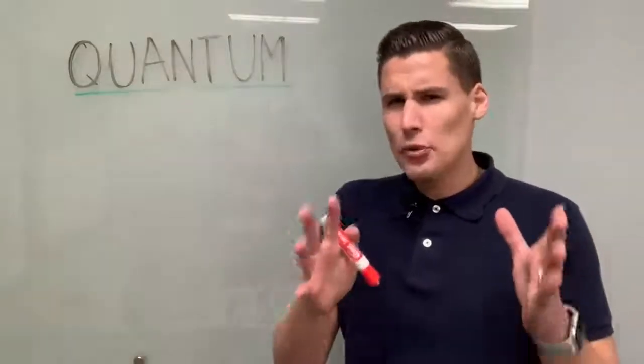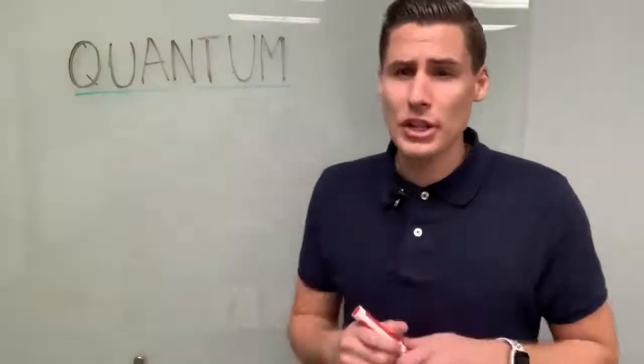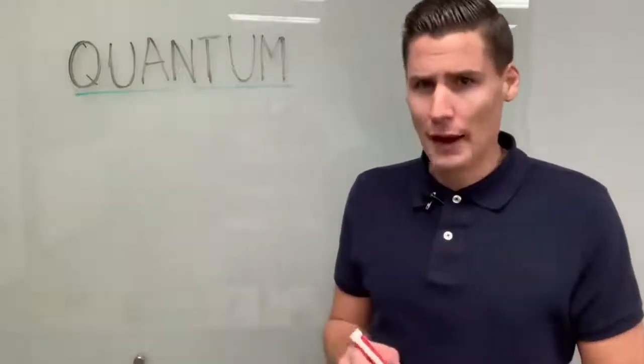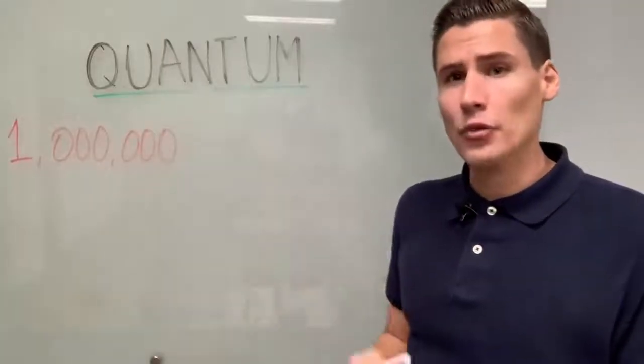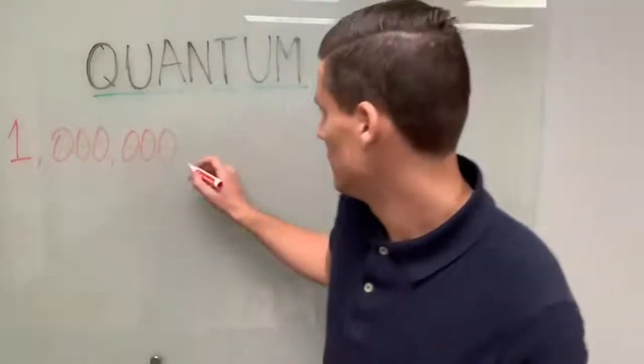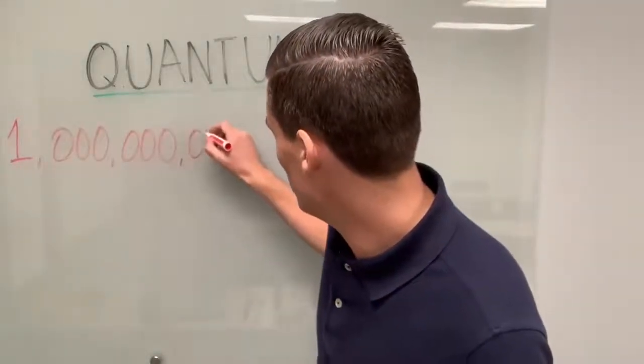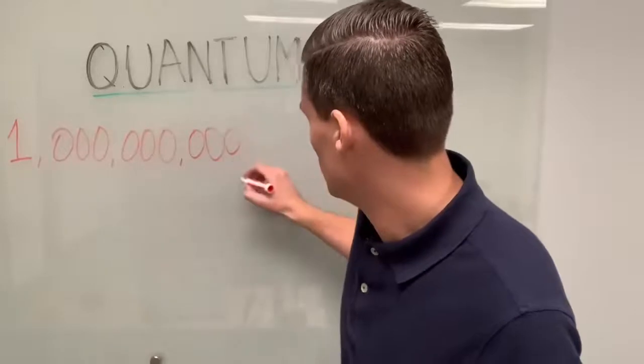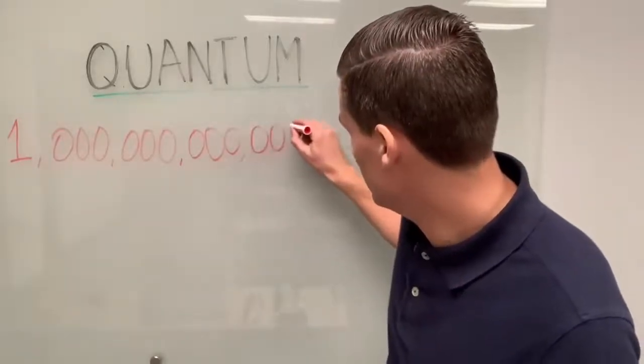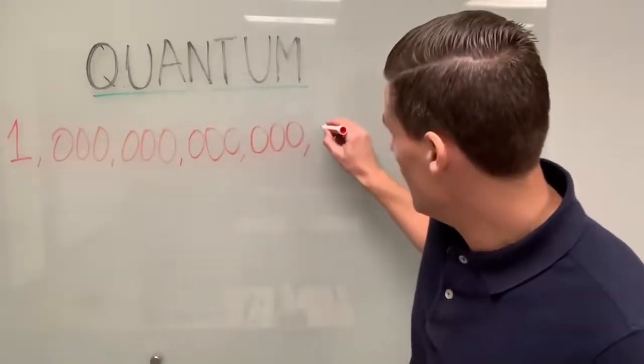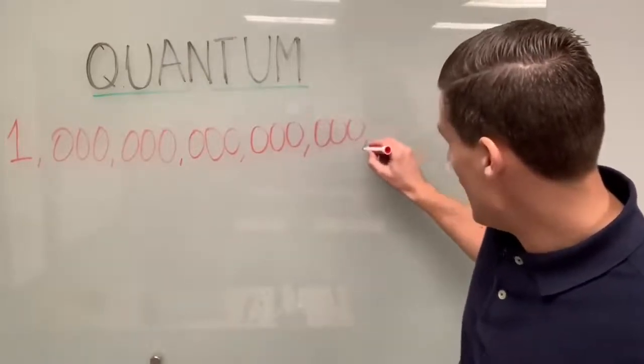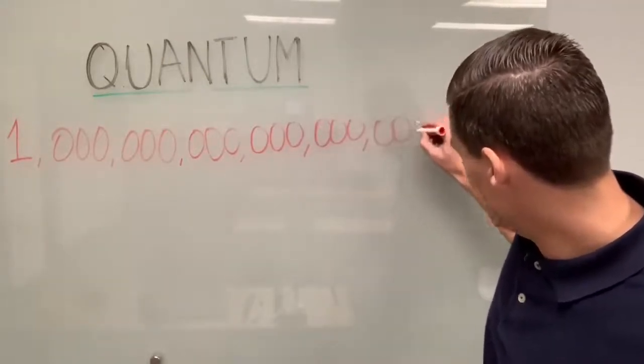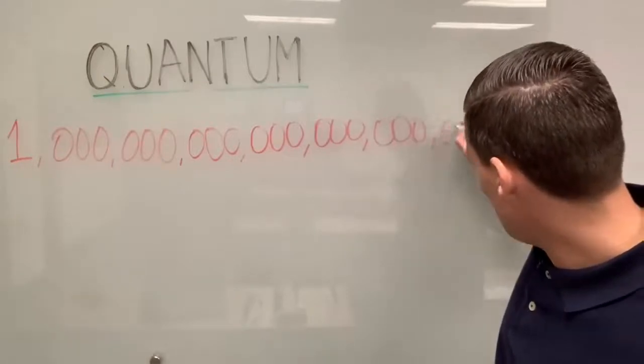So again, just to try to help you wrap your head around how unimaginably huge that number is, let's write that out. So we're going to start over here. That right there is one million. There's a billion. A trillion. A quadrillion. A quintillion. A sextillion.